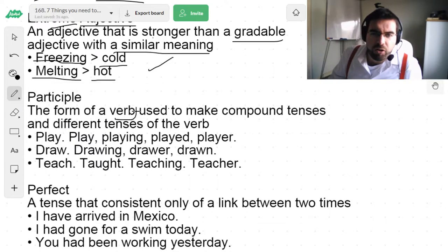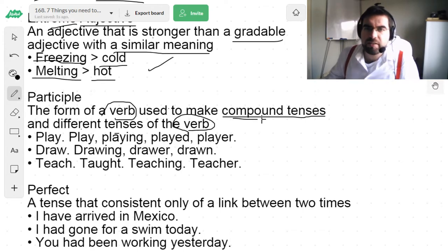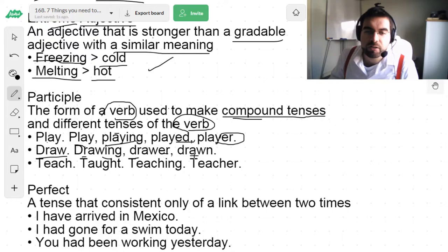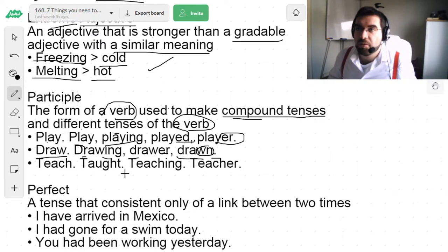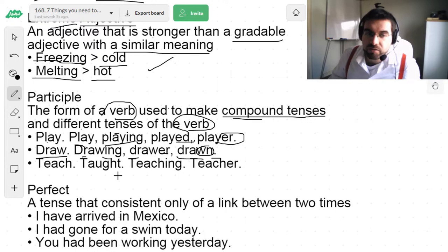The form of a verb used to make compound tenses and different tenses of the verb. Compound tenses combined with the words. Play. Play. Playing. Played. Player. Draw. Drawing. Drawer. Drawn. Different suffixes that changed the word meaning. Or even prefixes as well. Undrawn. Unteach. Mismanage. Manage. Managing. Managed. Manageable.